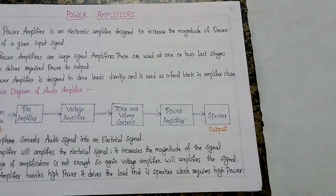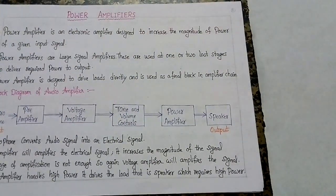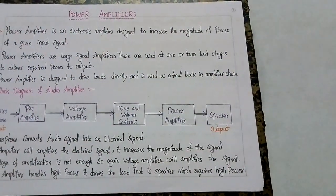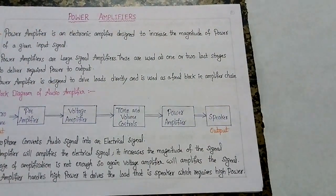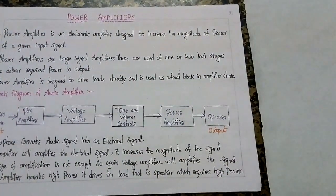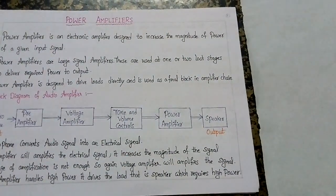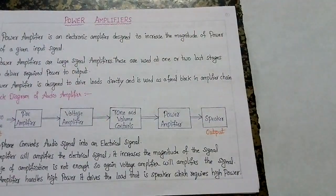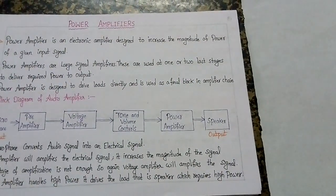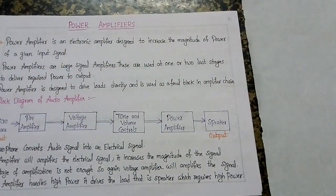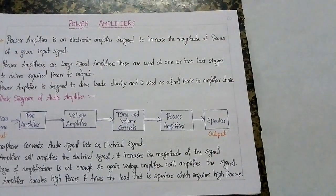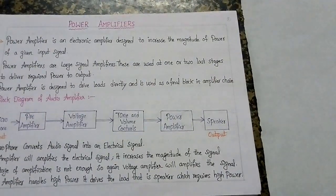Good afternoon students. Today we are going to see the fourth unit, that is power amplifiers — introduction. We already seen in the previous unit about multi-stage amplifiers. In multi-stage amplifiers, we need to use two or more stages of amplifiers between the input and the output, so that the output obtained will be the amplified output. We also seen the cascaded amplifier and cascode amplifier.